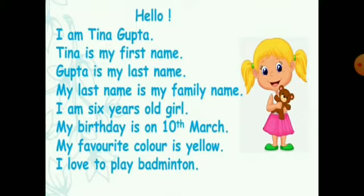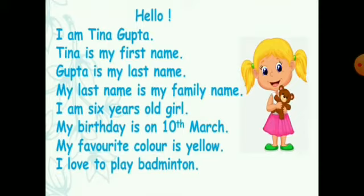I am a 6 years old girl. Here, Tina is telling about her age. From this sentence, we can understand her gender — girl. Girl means her gender is female. There are two types of genders: male and female. If you are a boy, then your gender is male. And if you are a girl, then your gender is female.